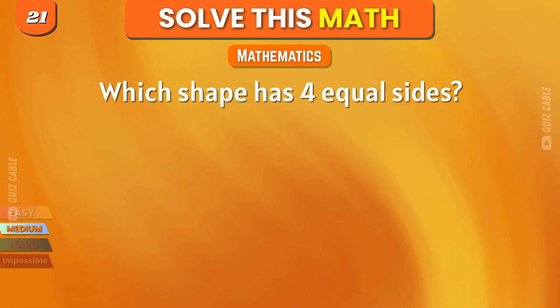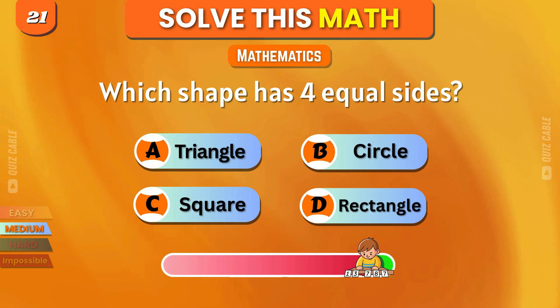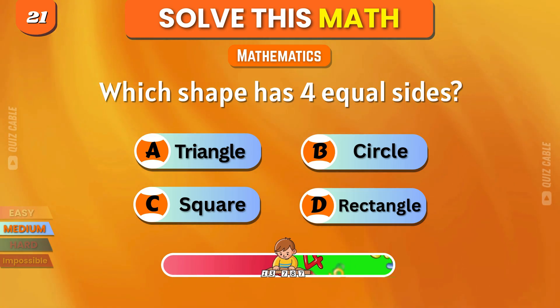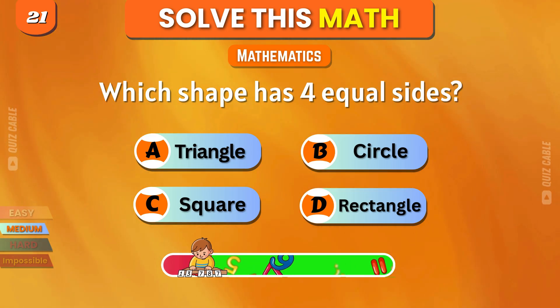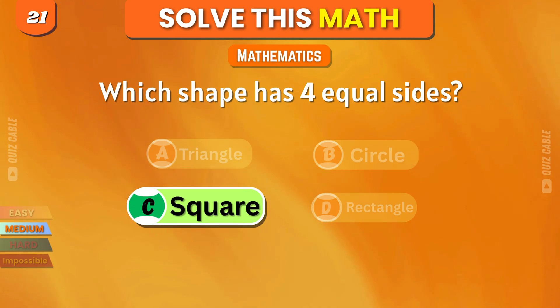Which shape has 4 equal sides? Triangle, circle, square, rectangle. Correct answer, square.